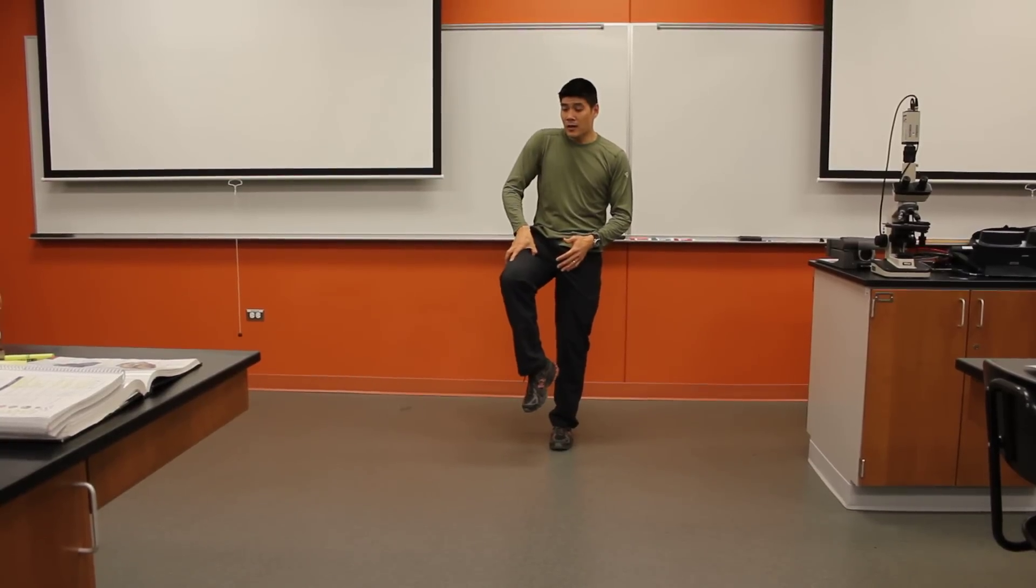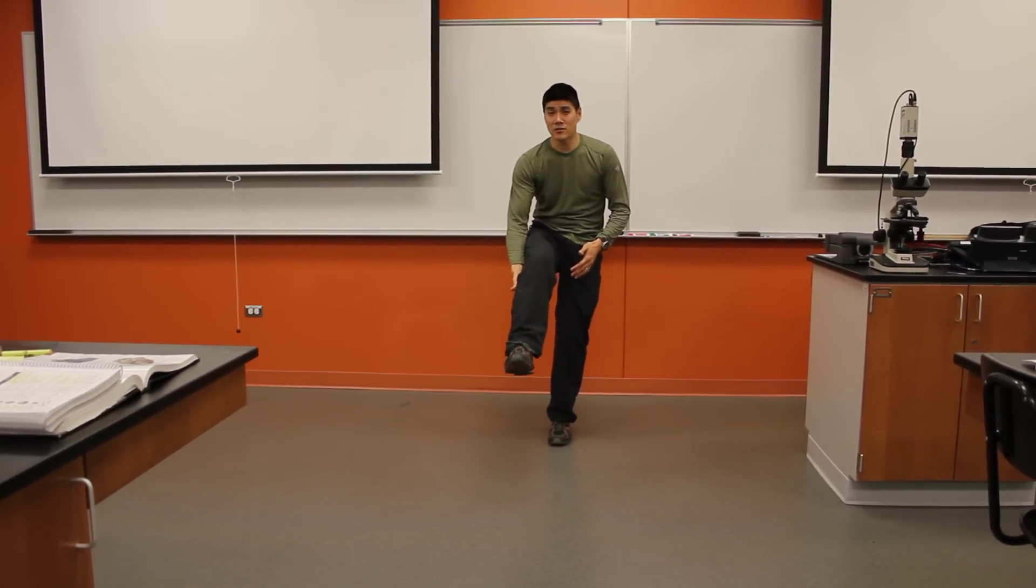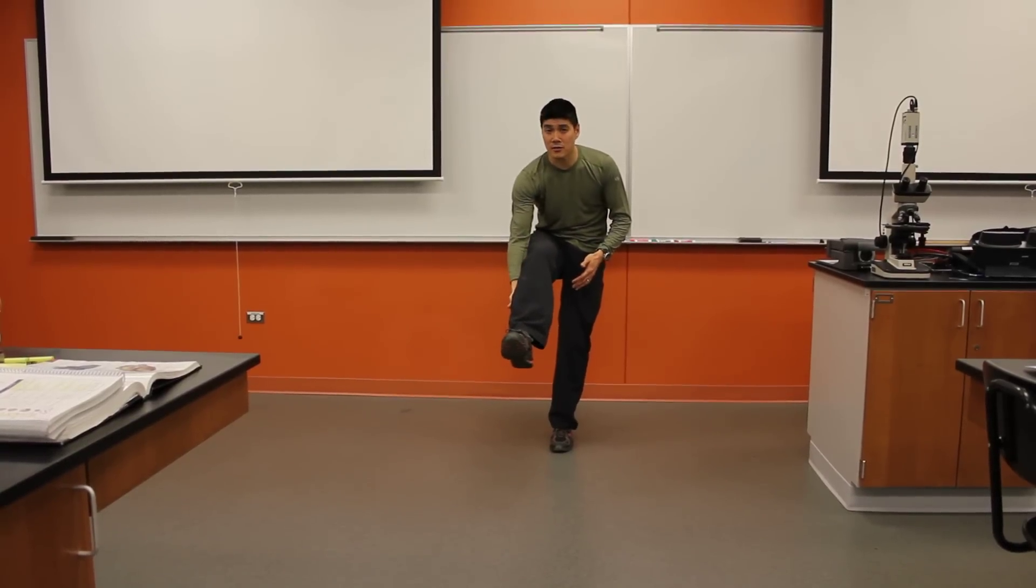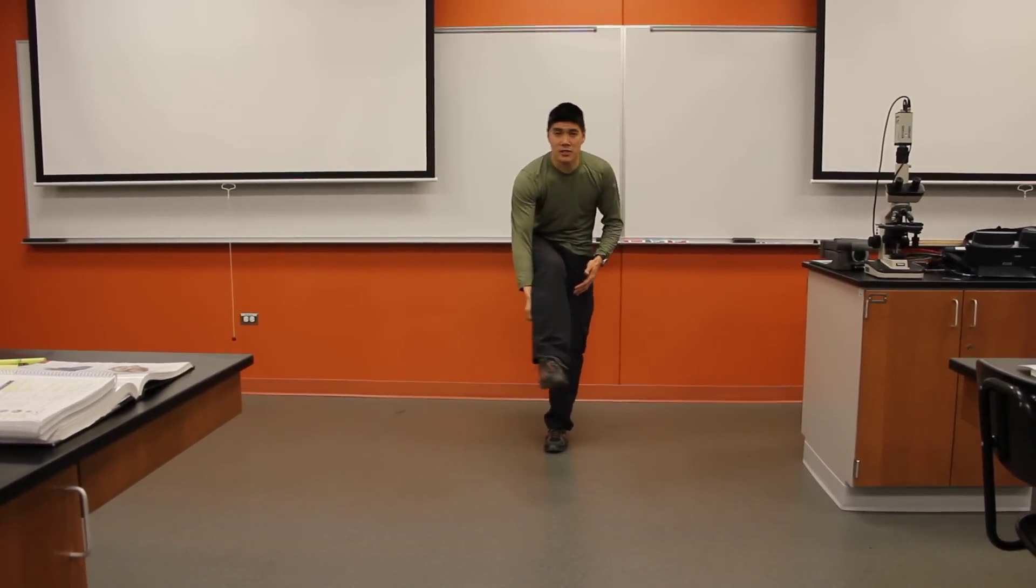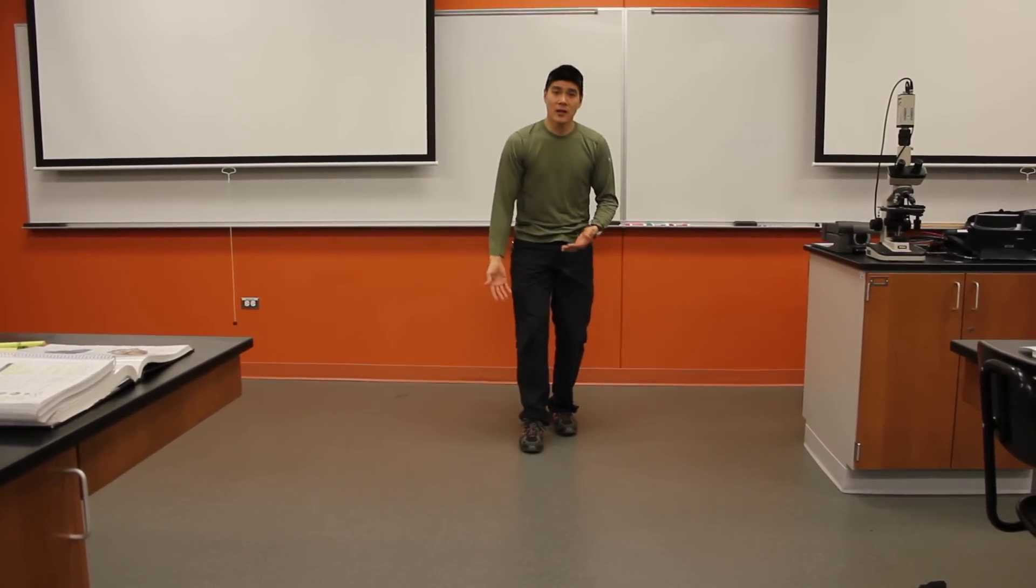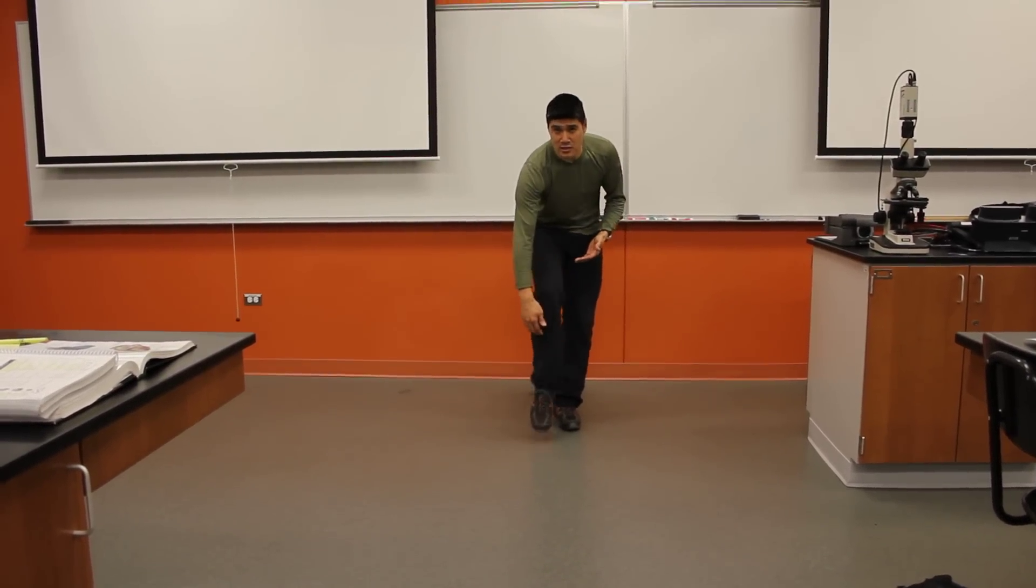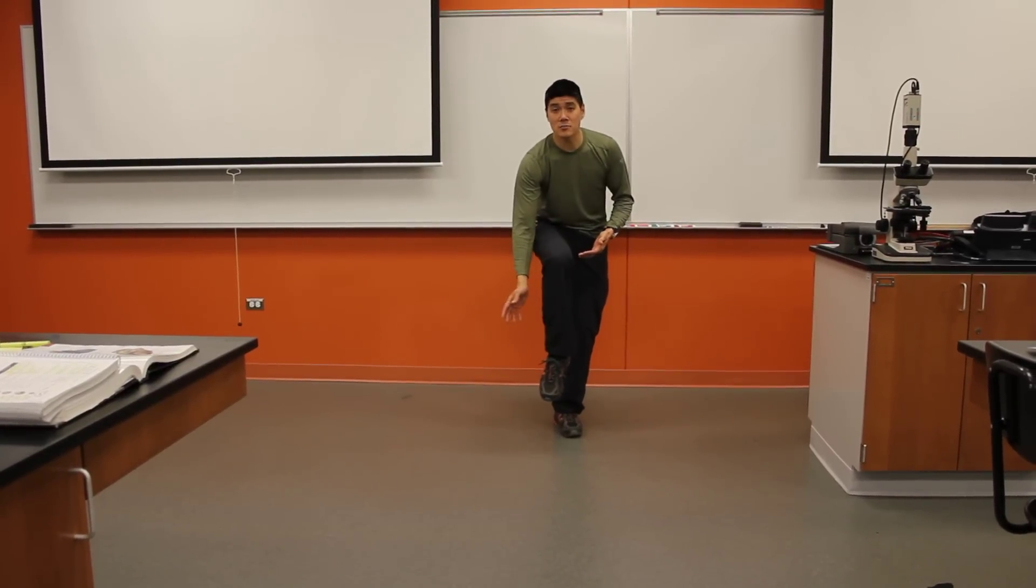External iliac continues as the femoral artery, that gives off the deep femoral. Femoral continues as the popliteal artery, which continues as the anterior and posterior tibial arteries. Posterior tibial gives off the fibular or peroneal branch, and then continues on the bottom of the foot as the medial and lateral plantar. Anterior tibial continues on the top of the foot as the dorsalis pedis artery.